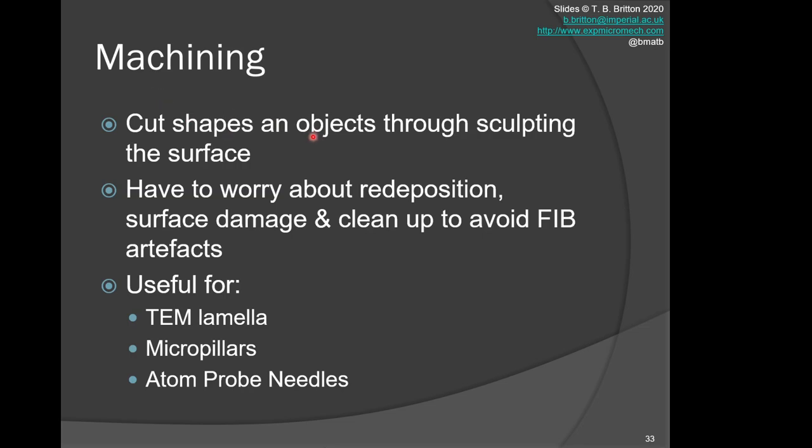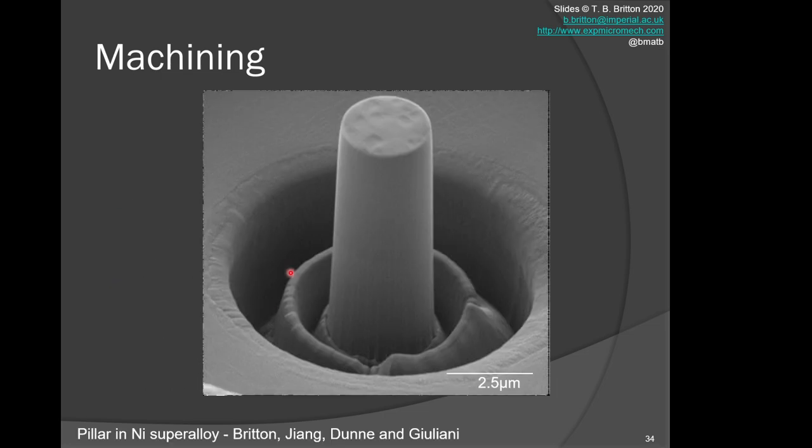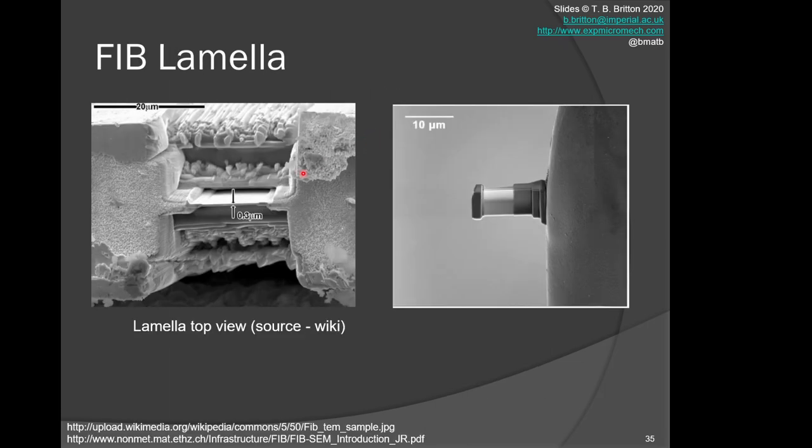Within your experiments, you can also do machining, so you can cut shapes. The machining will cut shapes through sculpting the surface. You have to worry about redeposition, surface damage, and cleanup, but it's useful for TEM lamellar preparation, micropillars, and atom probe needles—common application areas. This is some work I did looking at nickel superalloy pillars. This is cutting a mechanical object where we have a single crystal test specimen, which was very useful for mechanical testing.